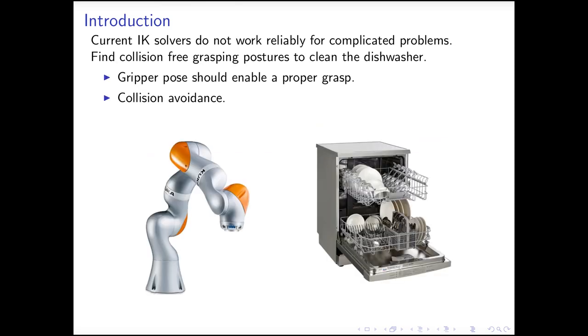For example, if we want to use this robot arm to clean the dishwasher, we might impose the constraint that a gripper pose should enable a proper grasp. So instead of specifying one single desired gripper pose, there is a whole set of possible gripper poses. Also, we want our posture to be collision-free. This can be a challenging problem to many IK solvers, that they cannot guarantee to solve the problem 100% of time.